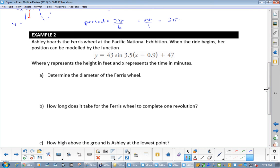Example 2. Ashley boards a Ferris wheel. When the ride begins, her position can be modeled by this function here. Again, this is my a, this is my b, this is my c, this is my b, and that's my d.